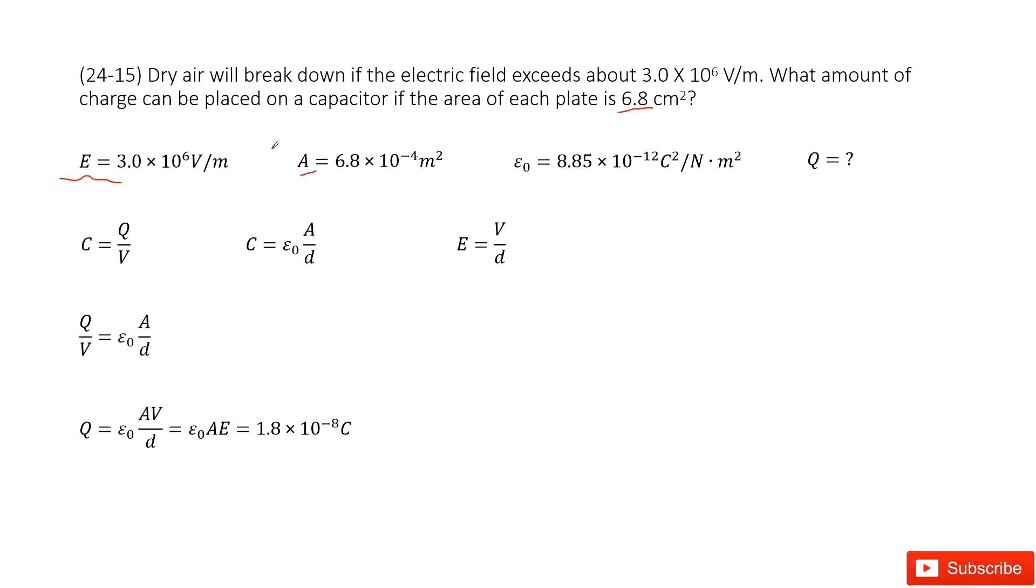The air will not break down, that means that E just equals 3 times 10 to the 6 or 10 power 6 volts per meter. This is the electric field between these two plates in conductor, and A is given, and also we know the constant epsilon is given to find the charge Q.